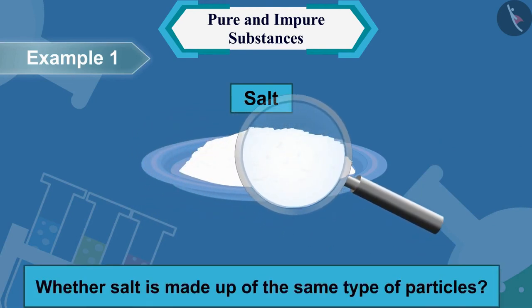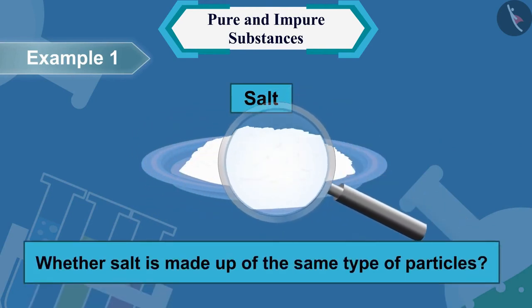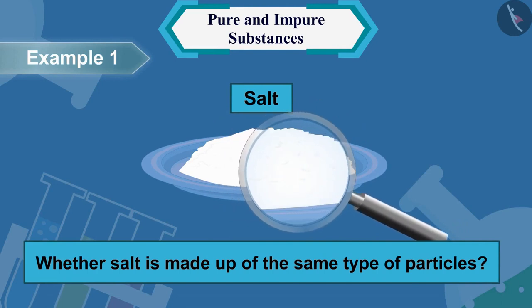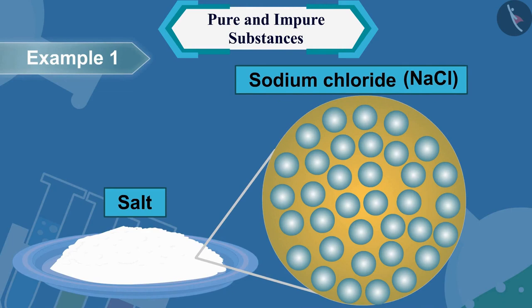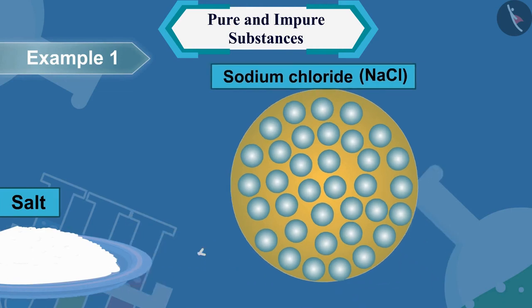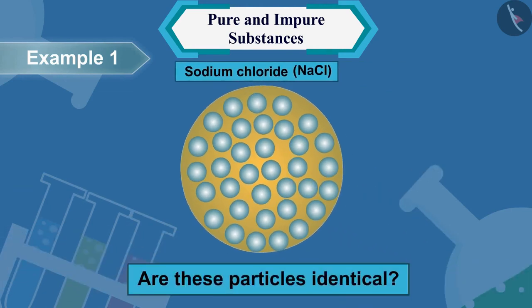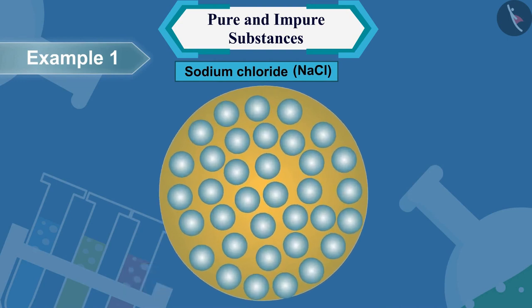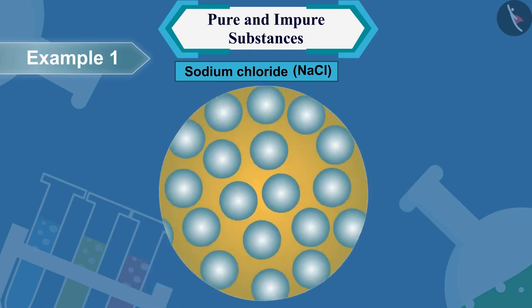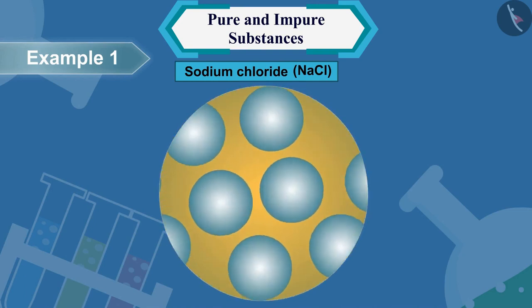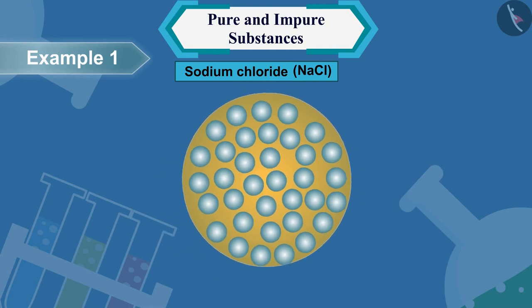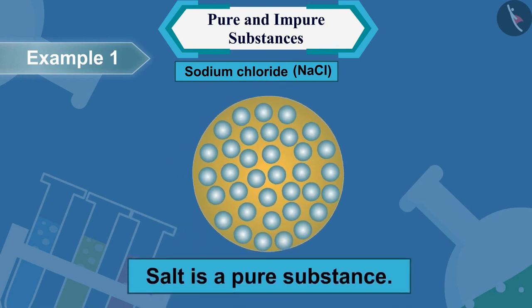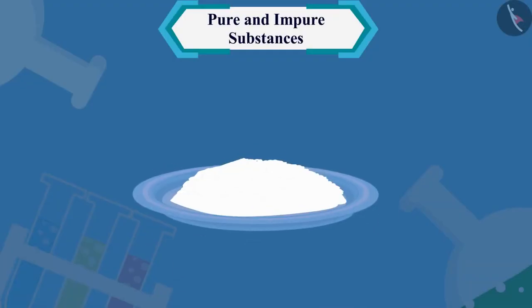Let us take an example of salt. Is salt a pure substance? To find out, we will first check whether salt is made up of the same type of particles. Here you can see the particles of sodium chloride present in the salt. Are these particles identical? Yes — the composition of salt is composed of molecules similar to sodium chloride.